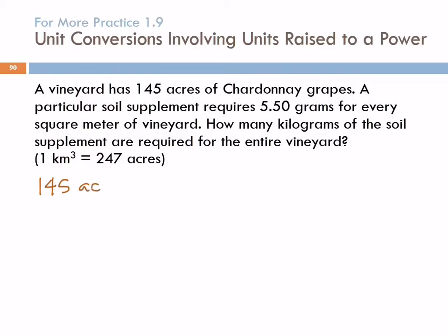So 145 acres, got to include those units. And we've got 5.50 grams for every square meter. That is grams per square meter. You need 5.50 grams per square meter. The other thing that's given is one cubic kilometer is equal to 247 acres. I'm not going to rewrite that because it's just right there and nice. There's a typo in this problem. You see it?